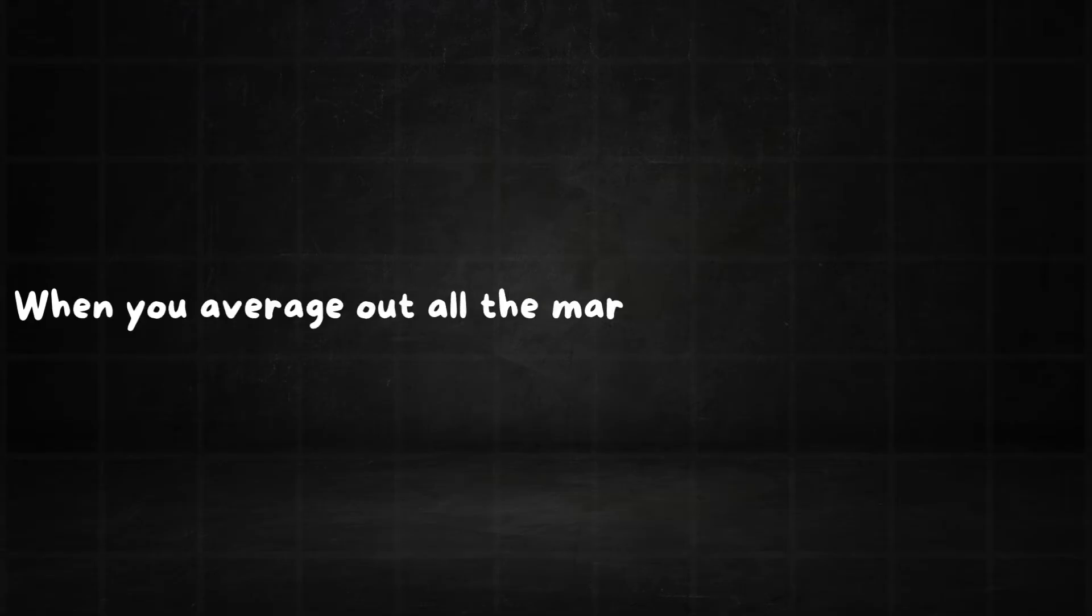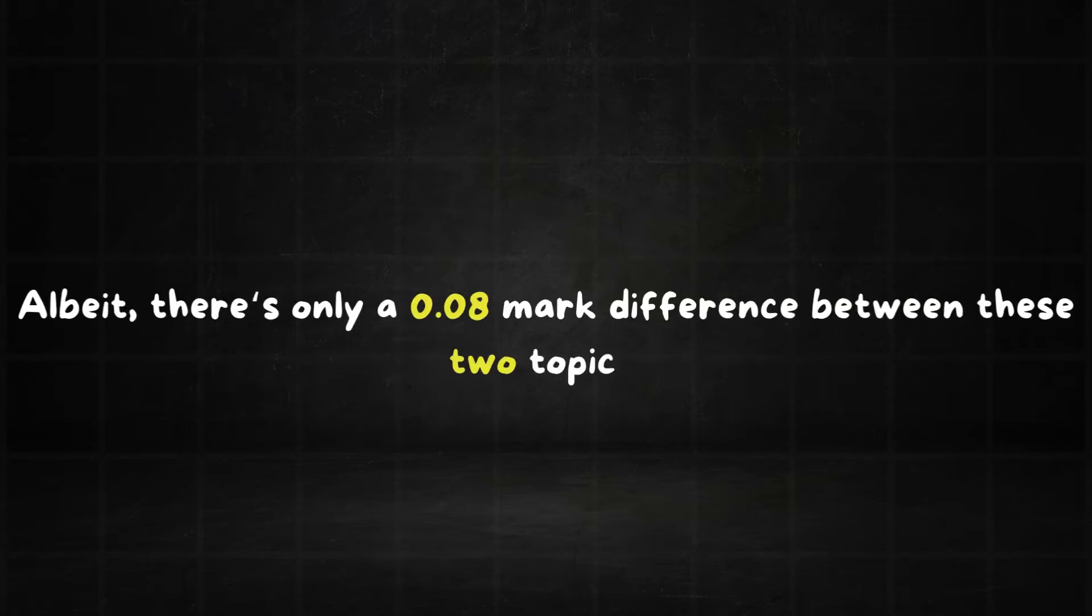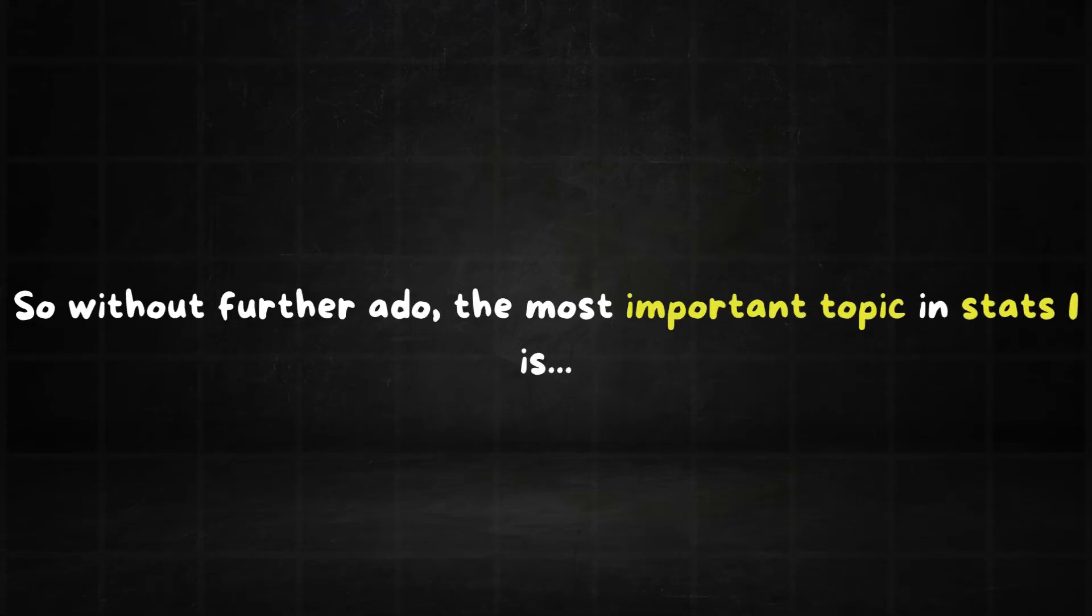When you average out all the marks for papers from 2020 to 2023, we have a winner though. Hope here there's only a 0.08 mark difference between these two topics. So without further ado, the most important topic in stats 1 is... Drumroll please. The normal distribution.